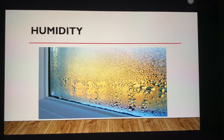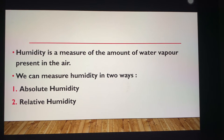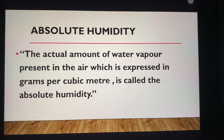Then we have humidity. Humidity is basically the actual amount of water present in the air. The air has a certain capacity to hold water vapor at a given temperature. We can measure humidity in two ways: number one is absolute humidity, and number two is relative humidity. Absolute humidity is the actual amount of water vapor present in the air, expressed in terms of grams per cubic meter.